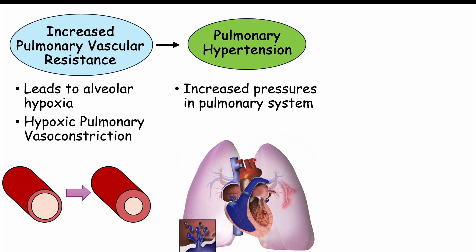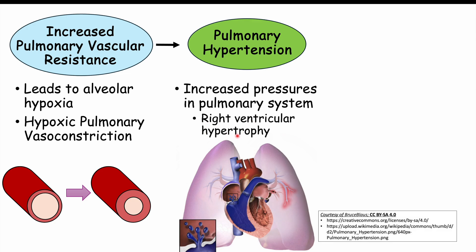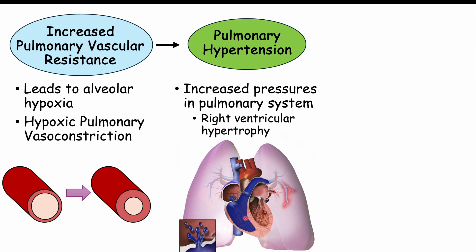Pulmonary hypertension leads to right ventricular hypertrophy. Because there is increased pressure within the pulmonary system, the right ventricle must pump harder to get blood into that high-pressure system — it needs to do so to get blood oxygenated. Over time, the musculature of the right ventricle becomes bigger and bigger, like working out a muscle. That is right ventricular hypertrophy.